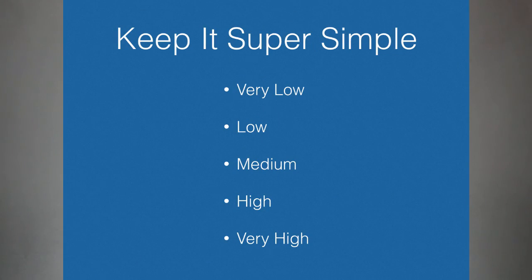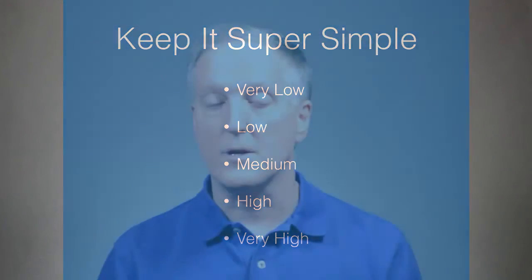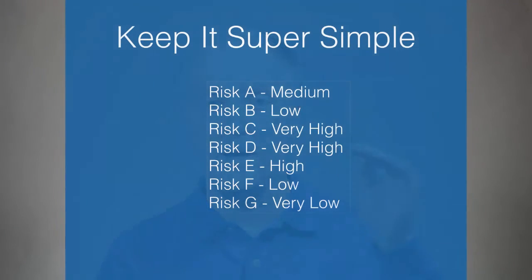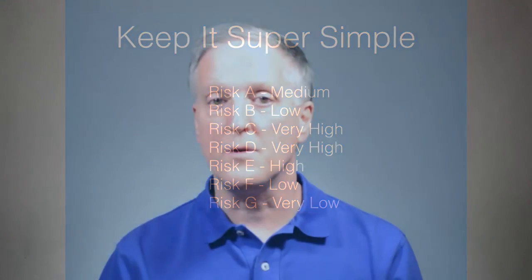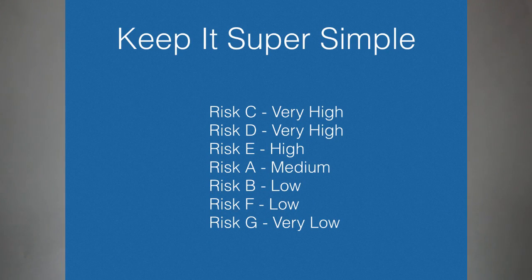So let me share with you two ways to do this — one that's a very simple, quick way, and one that involves a little more time but is fairly simple too. Method number one is what I call the KISS method: Keep It Super Simple. If you've got a small project, there's no need to spend a tremendous amount of time evaluating the risk. You might use a scale like this: very low, low, medium, high, and very high. For each risk, we would go through — risk A might be rated medium, risk B might be low — and then we would sort those risks by their qualitative risk ratings. Very quick, but it gives us a sense of which risks are most important.